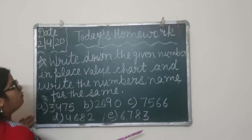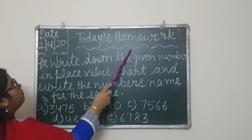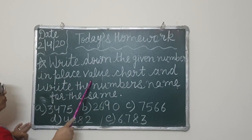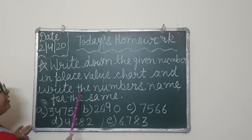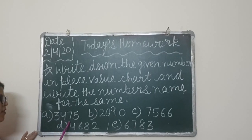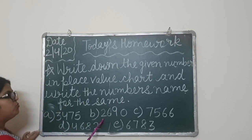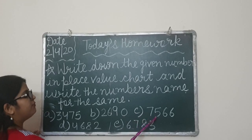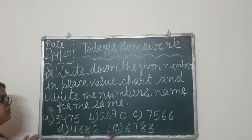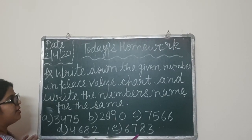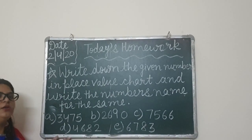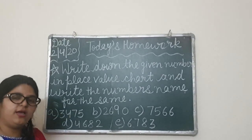Now students, it is homework time. Today's homework: write down the given numbers in the place value chart and write the number name for each. The numbers are: 3475, 2690, 7566, 4682, and 6783. Please do your homework neatly. Thank you and have a nice day.